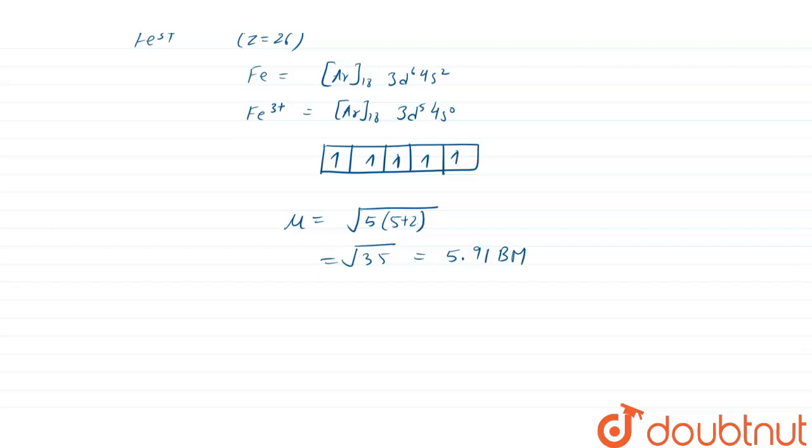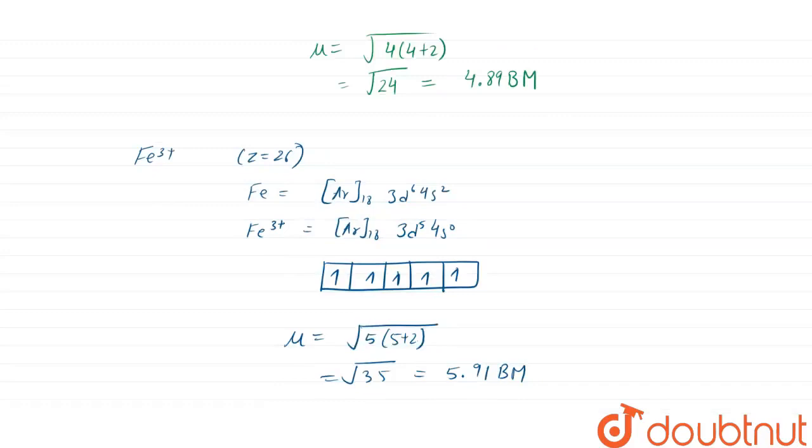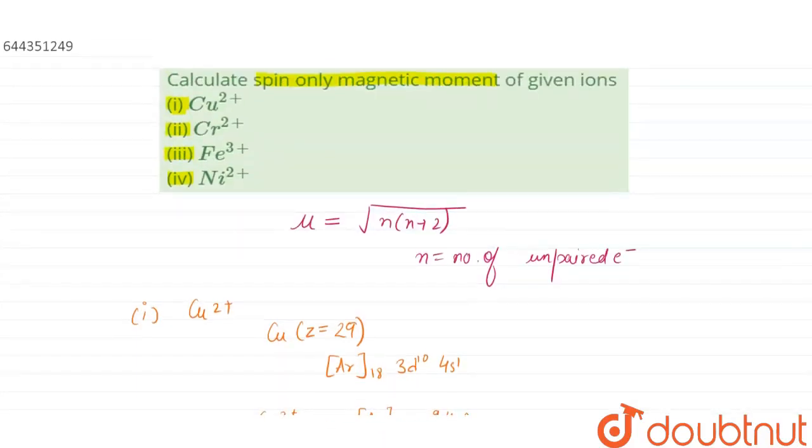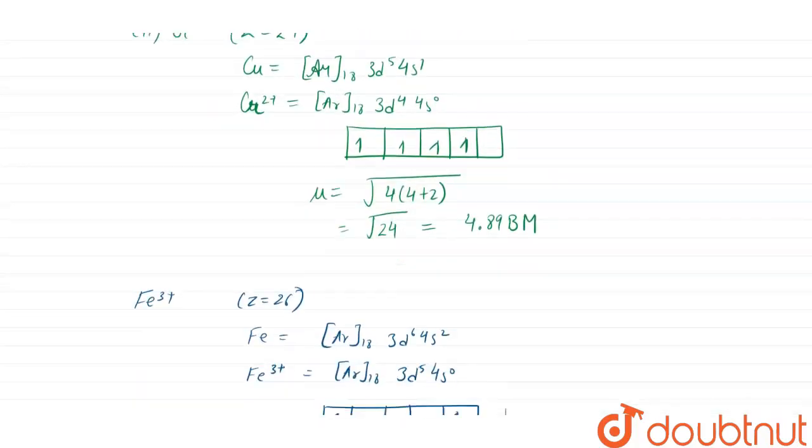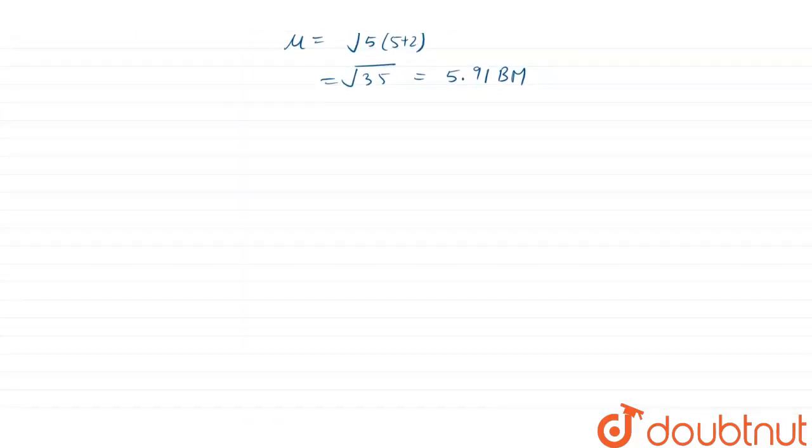Moving on to our last one, that is nickel 2 plus, which has atomic number 28. We know that nickel electronic configuration will be [Ar]₁₈ 3d⁸ 4s².